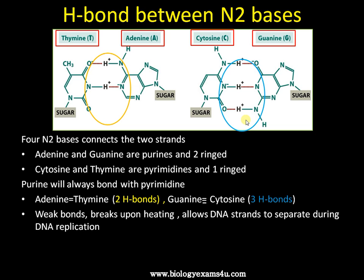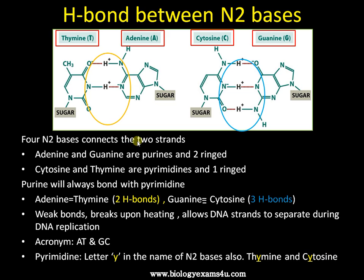These are weak bonds. The stability of the DNA molecule is the additive effect of these hydrogen bonds. The bonds break upon heating in a process called denaturation, which allows DNA strands to separate during DNA replication. A helpful memory tip: A-T and G-C pairing, and to remember pyrimidines, look for the letter 'y' in the name — thymine and cytosine both contain 'y', and they are pyrimidines.